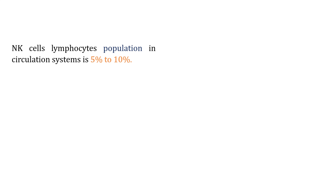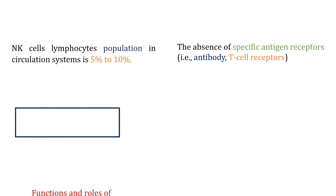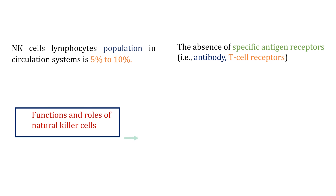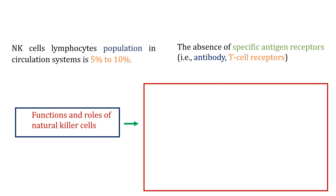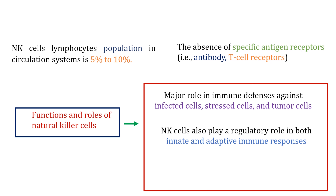The NK cell population in the circulatory system is about 5% to 10%. Despite the absence of specific antigen receptors like antibodies or T-cell receptors, they play a major role in immune defense against infected cells, stress cells, and tumor cells. NK cells also play a regulatory role in both the innate and adaptive immune systems.